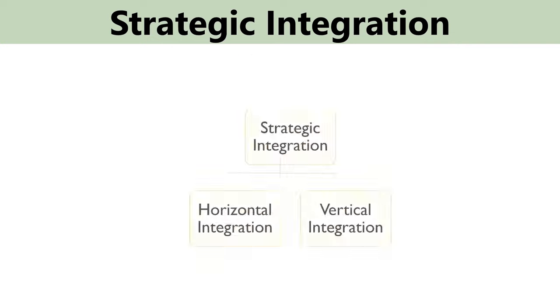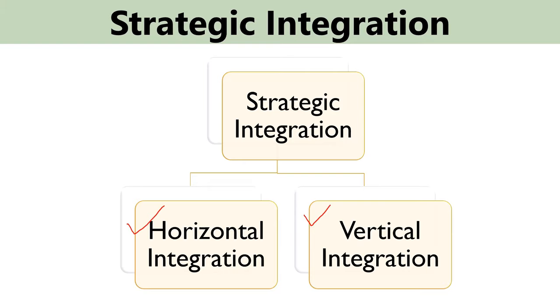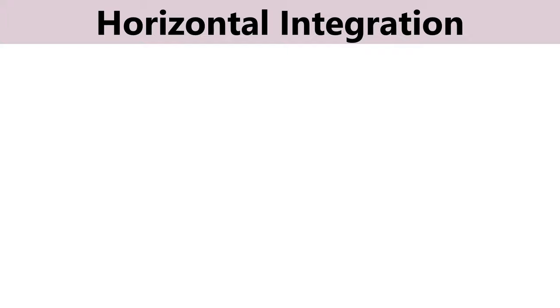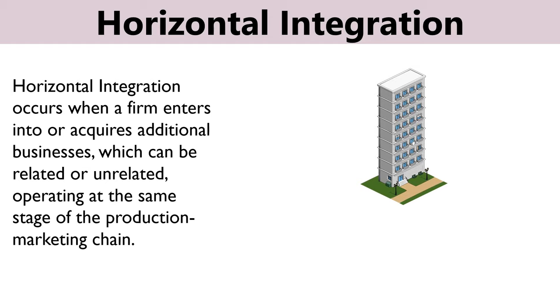Strategic integration can be of two types: horizontal integration and vertical integration. Horizontal integration is a business strategy in which one company acquires a similar company that operates at the same level of the value chain. This integration results in access to new markets and eliminates competition. It occurs when a firm enters into or acquires additional businesses, which can be related or unrelated, operating at the same level of the production and marketing chain.